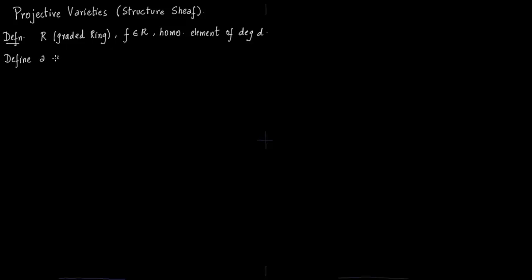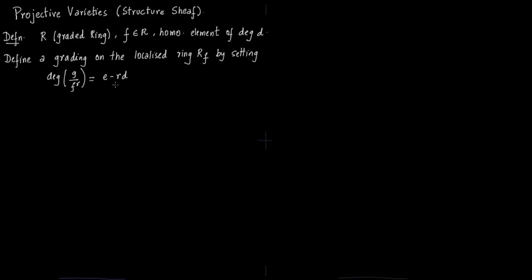We want to define the grading on the localized ring R_F. The localized ring R_F has elements of the form G over F to the power of N. For grading you need degree: R_1 direct sum R_2 direct sum R_3 and so on. This grading is defined by degree, so G over F^r has degree E minus r·D where the degree of G is E. As simple as it could be.